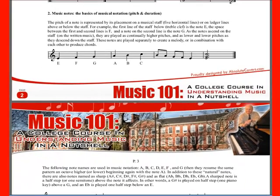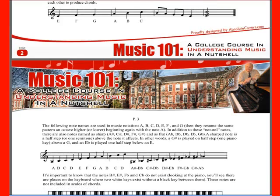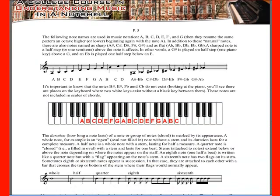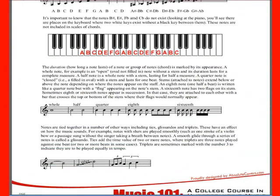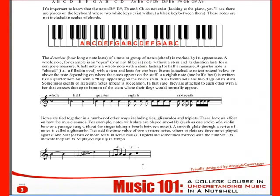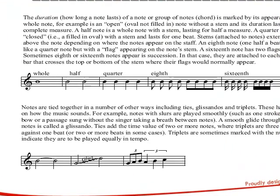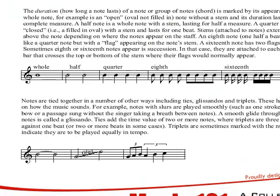And then chapter two is Music Notes — Basics of Musical Notation of Pitch and Duration. How long do you hold a note, and why, and how do you determine what a pitch is? And so there you have the different kinds of notes: whole, half, quarter, eighth, sixteenth, and so on. Here it talks about ties, and flags, and triplets, and glissandos, and so on.